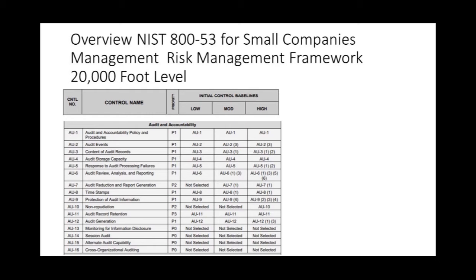Each security family has sub-controls for that family. The sub-control baseline is broken down into low, moderate, and high. The oversight agencies assign low, moderate, or high for their data classification. The sequence priority calls for security control implementation — what order you should implement these sub-families of controls. This is the 20,000-foot level.